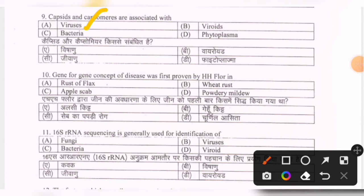Next question: the gene-for-gene concept of disease was first proven by H.H. Flor in — options are rust of flax, wheat rust, apple scab, powdery mildew. The correct option is the first one — rust of flax.